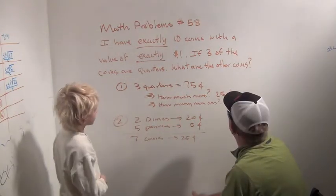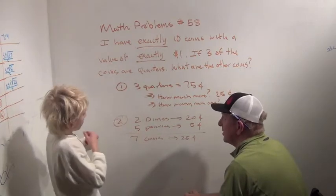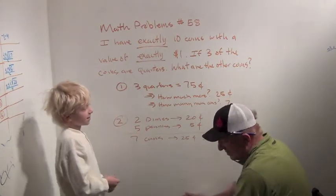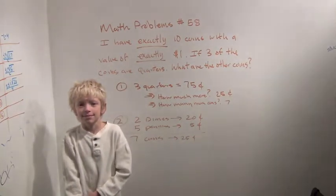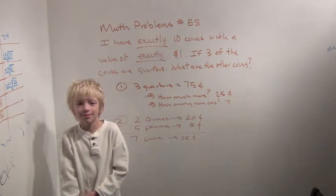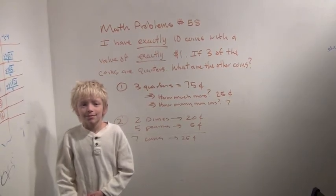Yes. And so what's the answer to the question? What are the other coins? The other coins are two dimes and five pennies. Good job, sweetie. That's a problem for, like, I think, fourth and fifth graders. That's a good solution. Good job. Thank you.